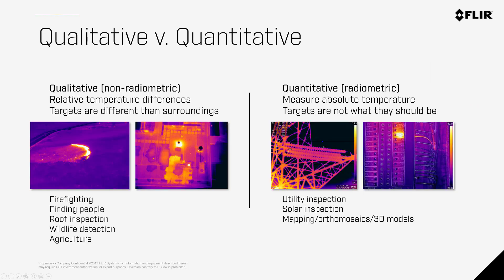It's important to know whether you're doing a qualitative or quantitative inspection. The simple question to ask yourself is if the actual temperature of your subject is important, or if the relative temperature is a good enough indicator. Detection of people or wildlife is a qualitative mission because regardless of the actual temperature of the subject, you're merely wanting to locate them through the distinction of temperatures between it and its surroundings.